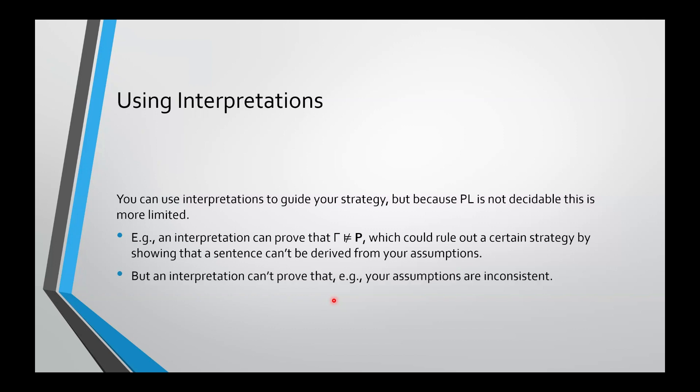However, you can't do things like, for example, constructing an interpretation that shows or that proves that your assumptions are inconsistent. So that sort of thing, you end up having to eyeball things like this, and there's a lot more guesswork in cases like this when you're working with PD. You don't have the mechanical procedure like truth tables to guide it, like you do with SD.